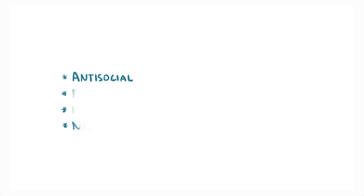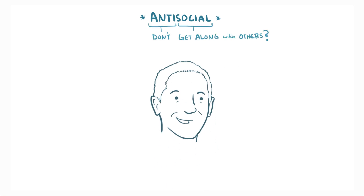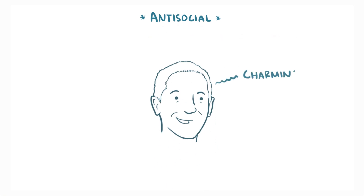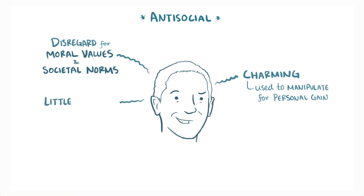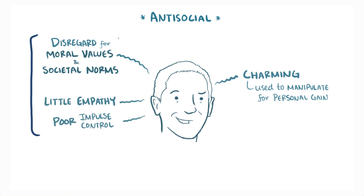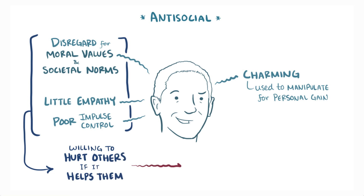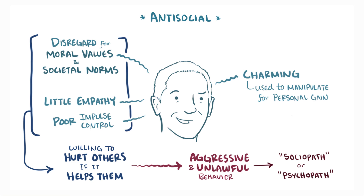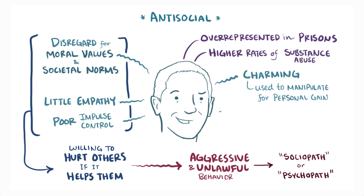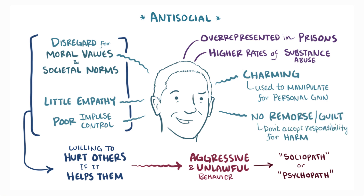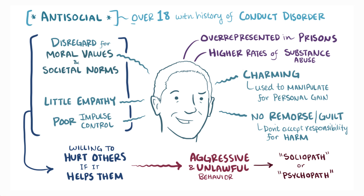Antisocial Personality Disorder sounds like they don't get along well with others, but in fact it's the opposite. They can be really charming and often use that to manipulate others for their personal gain. These individuals disregard moral values and societal norms, have little empathy and poor impulse control. This combination makes them willing to hurt others if it helps them, making them prone to aggressive and unlawful behavior, at times earning the label sociopath or psychopath. Individuals with this disorder tend to be over-represented in prison populations and have higher rates of substance abuse. They typically fail to show remorse or guilt and rarely accept responsibility for any of the harm that they cause others. This disorder is also unique in that individuals must be over 18 years old and have a history of conduct disorder in order to meet the diagnosis.